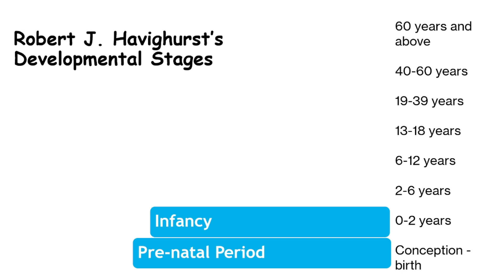Stage 3: Early Childhood, end of infancy to six years. In early childhood, children become more self-sufficient and engage in play that promotes cognitive and social skills. They start to develop school readiness. Imagine a four-year-old learning to dress independently and recognize letters and numbers through play. This stage is vital for laying the groundwork for academic skills and social interaction.